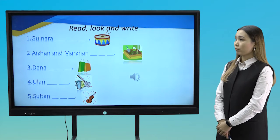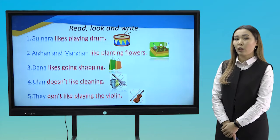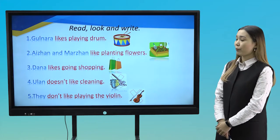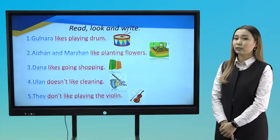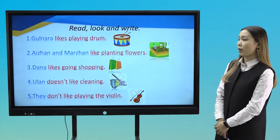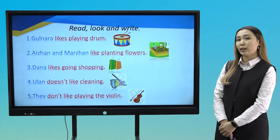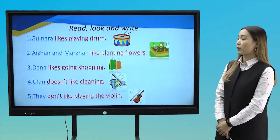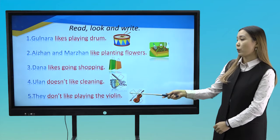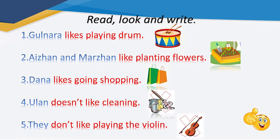Let's check. Bunnara likes playing drum. Ayjan and Majan like planting flowers. Dana likes going shopping. One doesn't like cleaning. They don't like playing the violin. Good job.